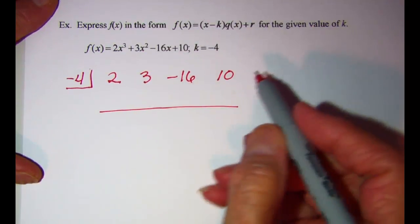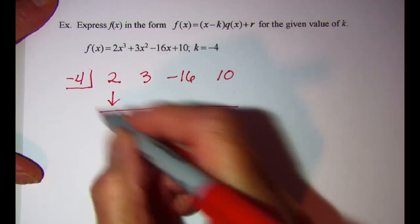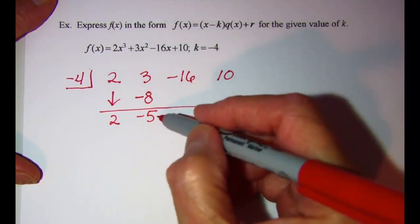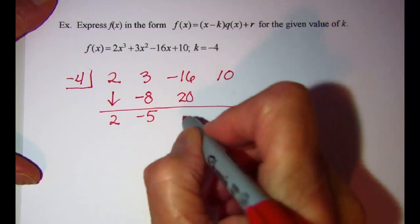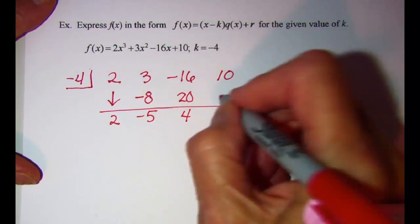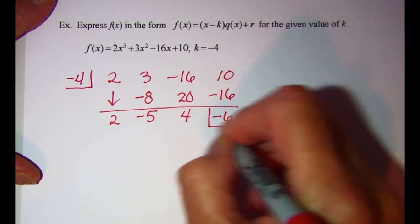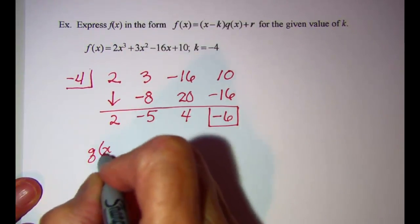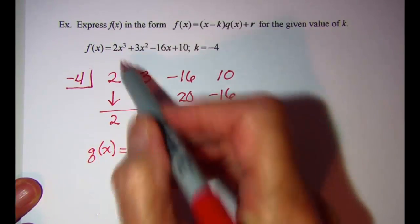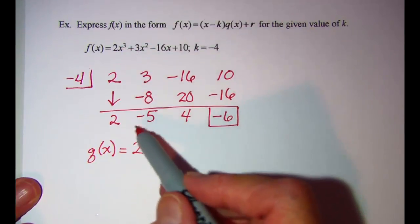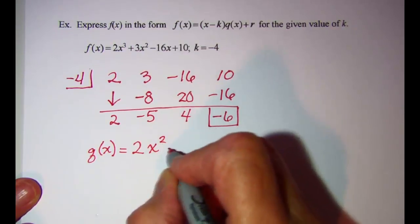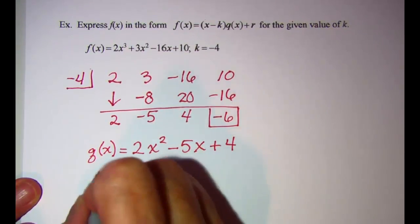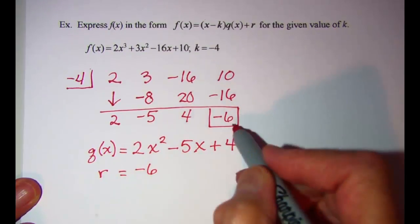Now perform the synthetic division: bring down 2, multiply by negative 4, write it, add; multiply, write it, add. The quotient q(x) is 2x squared minus 5x plus 4, since we started with a third degree polynomial. The remainder is negative 6, boxed at the end.